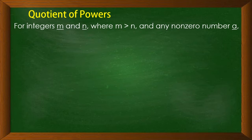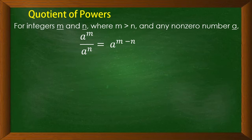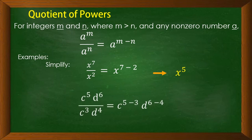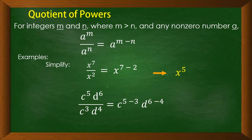The quotient of powers: for integers m and n where m is greater than n, and a is a non-zero number, a raised to m over a raised to n equals the common base a with the exponents subtracted. For example, x raised to 7 over x squared equals x raised to 7 minus 2, which is x raised to 5. Same as c to the 5th times d to the 6th over c to the 3rd times d to the 4th equals c raised to 5 minus 3 times d raised to 6 minus 4, which equals c squared times d squared.